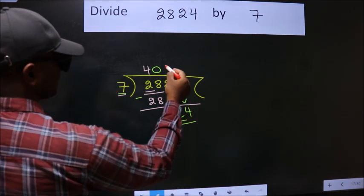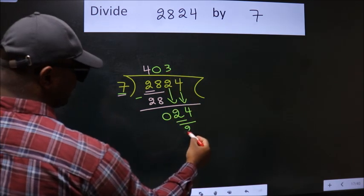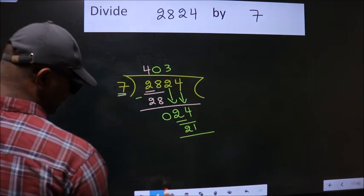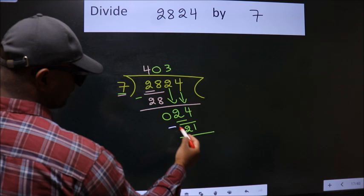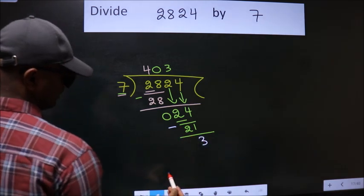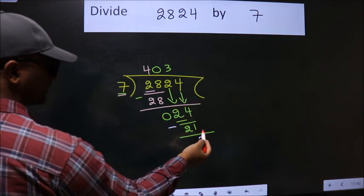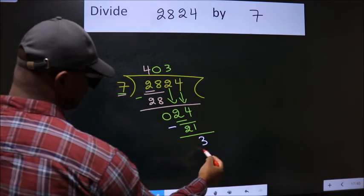...is 7 threes are 21. Now we subtract, we get 3. No more numbers to bring down, so we stop here.